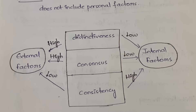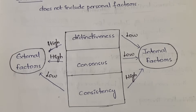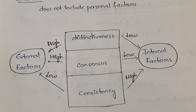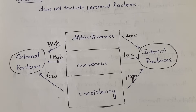Distinctiveness refers to the degree to which a person behaves differently in different situations. For example, at home your role is son, daughter, brother, or sister. At college your role is a student. With friends your role is a friend. You cannot behave in the same way in all three places — at college you are calm and focused, at home you have freedom to watch TV or talk to family, and with friends you do whatever you want.